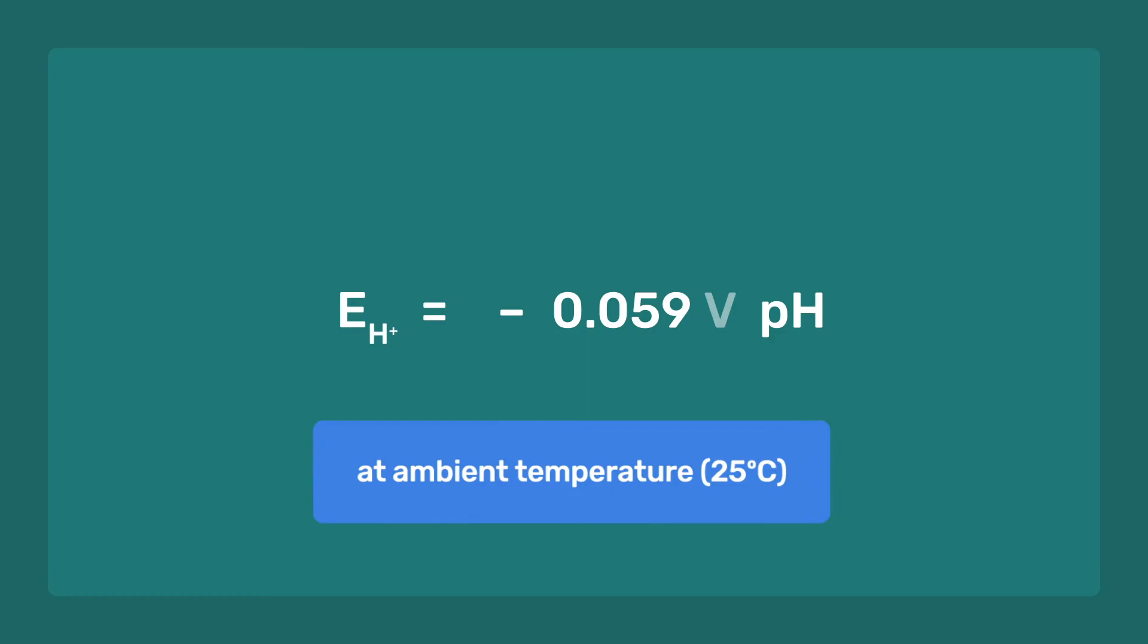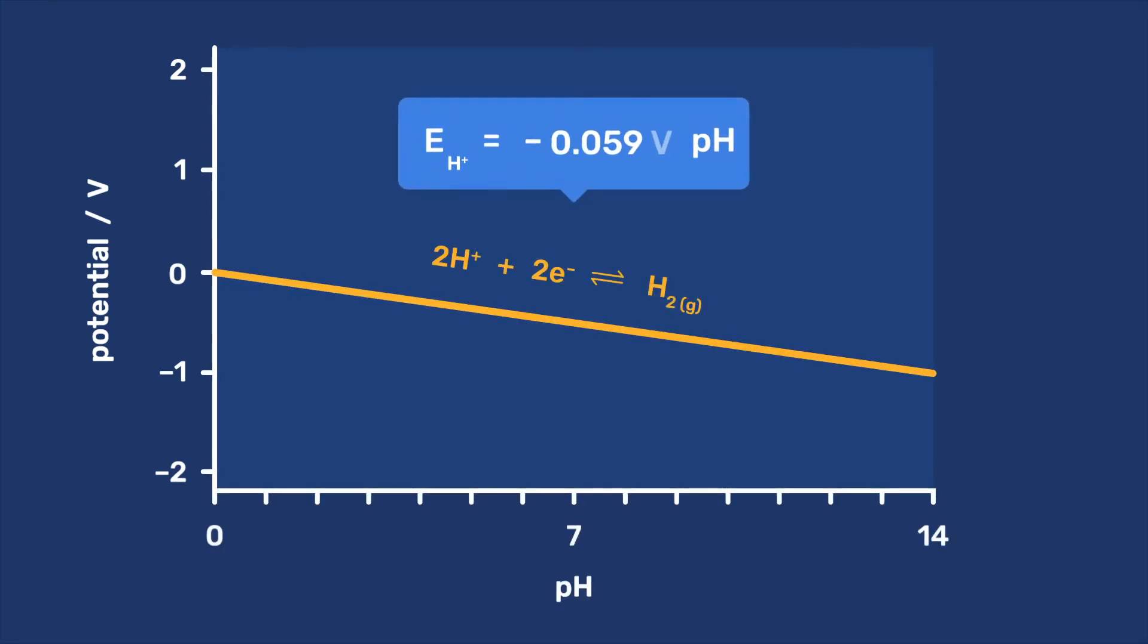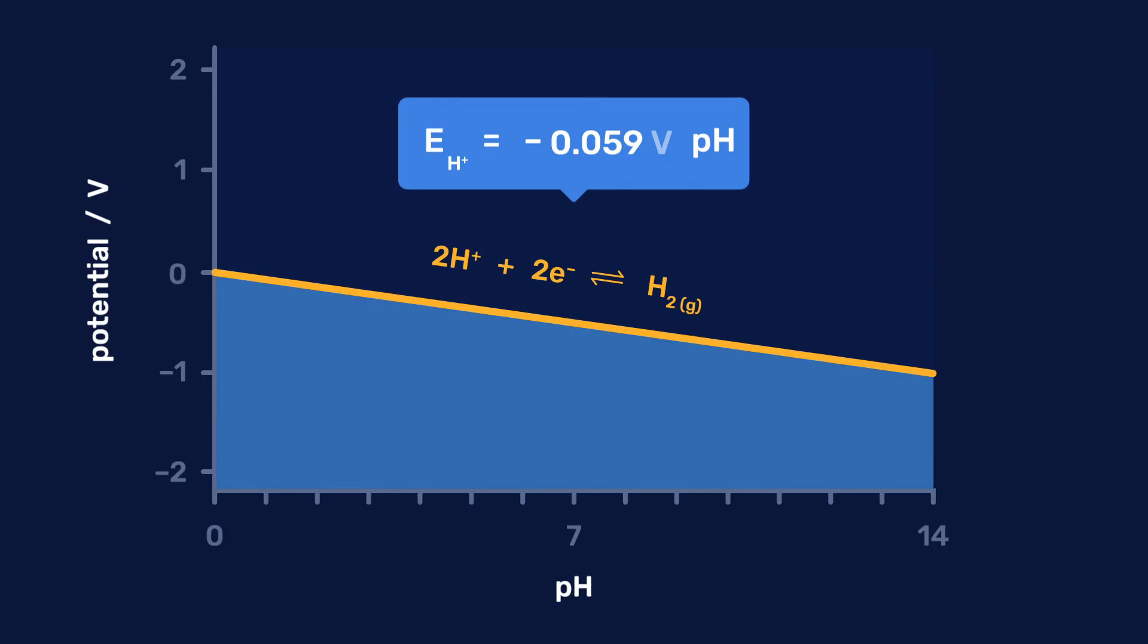This result can be represented graphically by plotting the half-cell potential versus pH. Electrochemical cells for which the combinations of pH and potential lie below this line lead to the production of hydrogen gas from protons present in water.